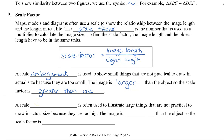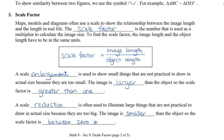You might also have a scale reduction. This is often used to illustrate large things that are not practical to draw in actual size because they are too big. So the image is now going to be smaller than the object, and the scale factor is going to be between 0 and 1.